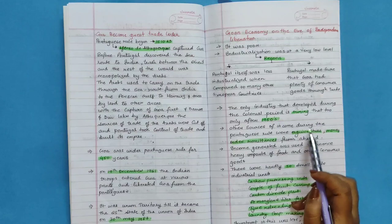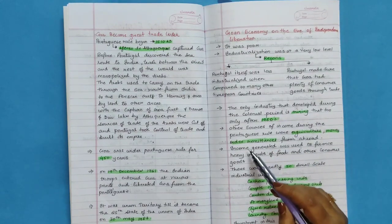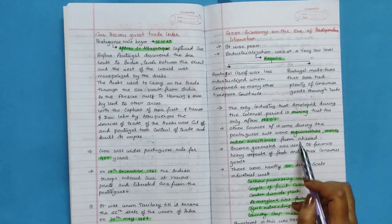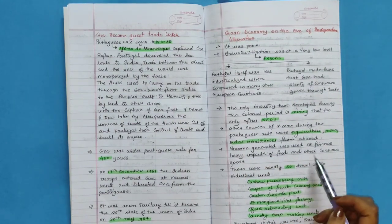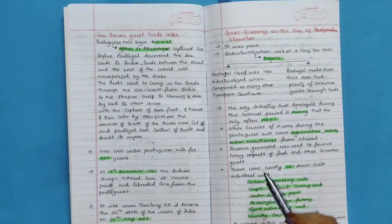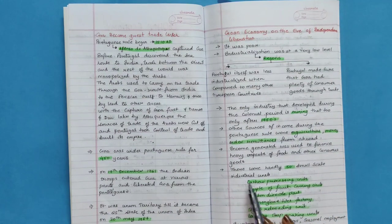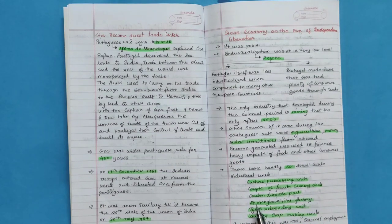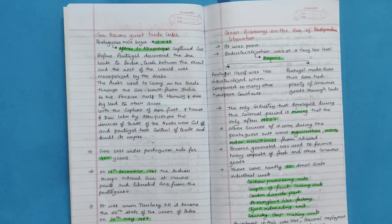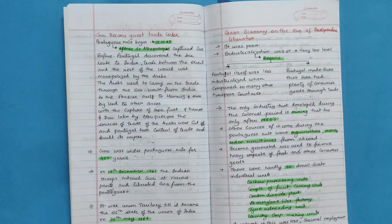Other sources of income during the Portuguese rule were agriculture, money order remittances from abroad. Income generated was used to finance heavy imports of food and other consumer goods. There were hardly 50 small-scale industrial units of cashew processing, couple of fruit canning, carbon dioxide plant, mangalore tile factory, tire retreating unit, laundry soap making unit.